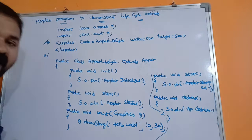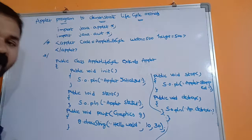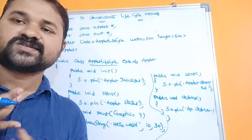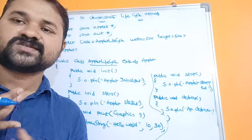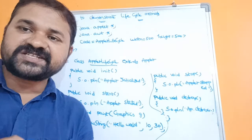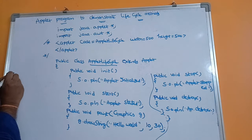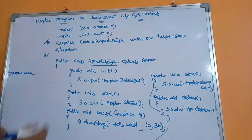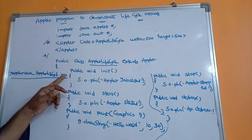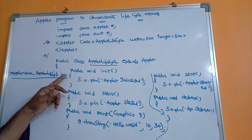Now we have to compile the program. The name of the program is AppletLifeCycle.java, so we run: javac AppletLifeCycle.java. Once we compile the program, we will get AppletLifeCycle.class. In order to execute the applet, we have to make use of the appletviewer tool: appletviewer AppletLifeCycle.java. Note that the extension is .java — we should not give the .class file.